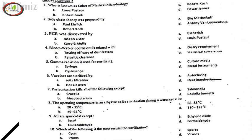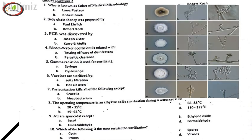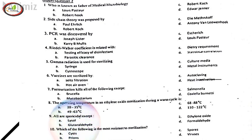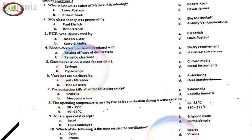1. Who is known as father of medical microbiology? C. Robert Koch. 2. Side-chain theory was proposed by, A. Paul Ehrlich. 3. PCR was discovered by, B. Carey B. Mullis. 4. Rideal-Walker coefficient is related with, A. Testing efficacy of disinfectant.